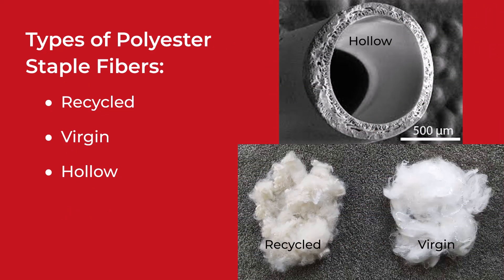Polyester fibers are typically categorized into two main types: virgin and recycled. Virgin polyester fibers are directly produced from polyester, while recycled polyester fibers are manufactured by recycling bottles and other polyester plastics. Additionally, there is another type — hollow fibers — which are crafted with a hollow area in the middle of each strand, making them lightweight and suitable for special applications like clothing.